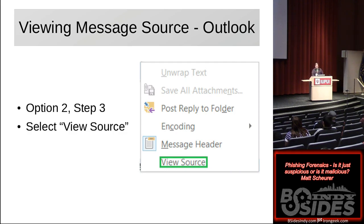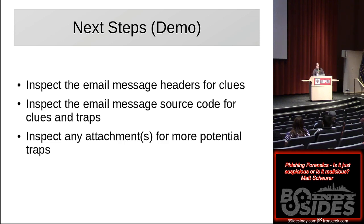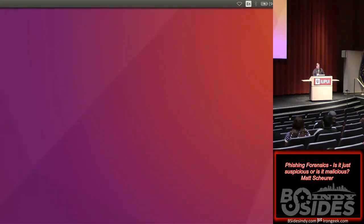I'm going to pull up a sample phishing email and walk through these things. What we want to do is begin by inspecting the message headers for clues, inspecting the email message source code for clues and traps, and then inspect attachments for more potential traps.